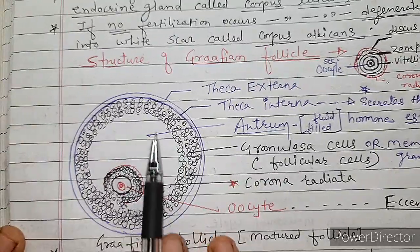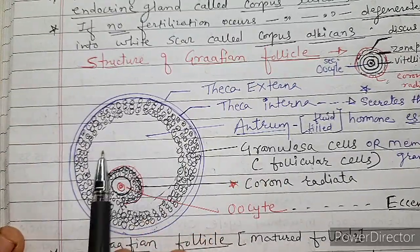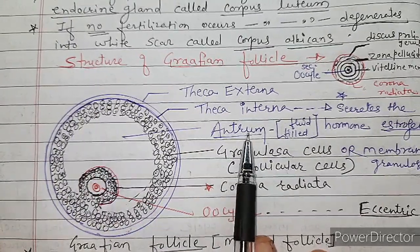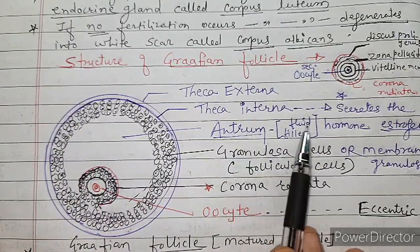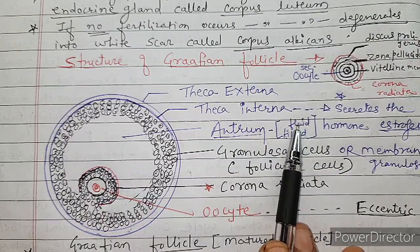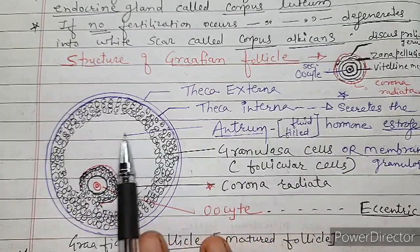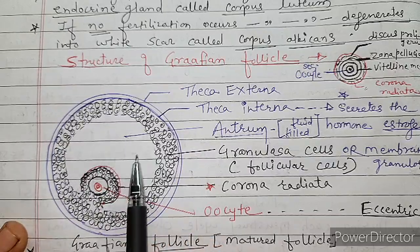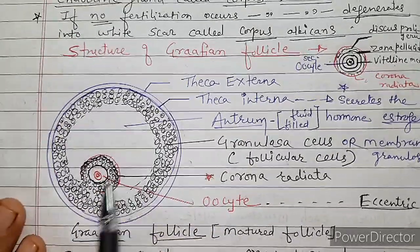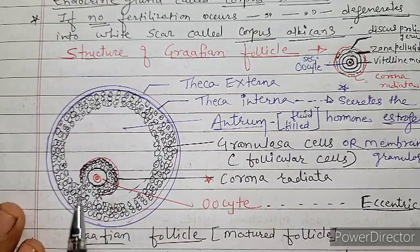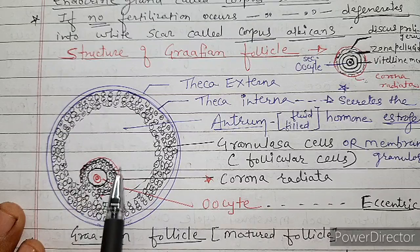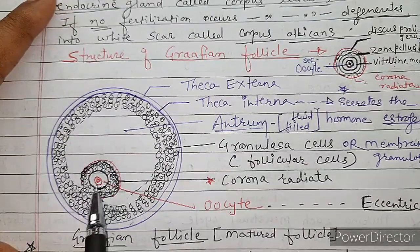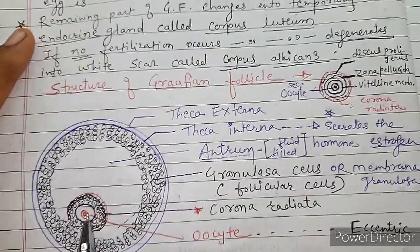The granulosa cells are also called follicle cells. Inside is a cavity called the antrum or antral cavity — it is not empty, it is filled with a fluid. So this is a fluid-filled cavity. Here the secondary oocyte is present.